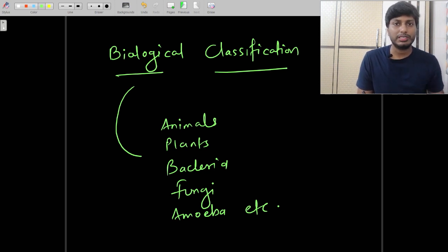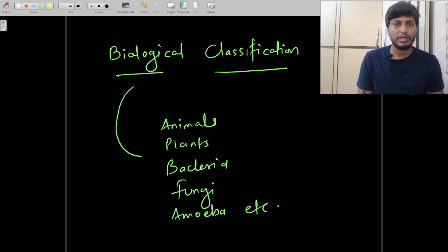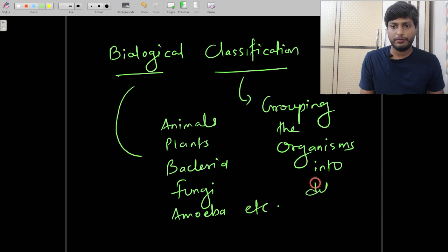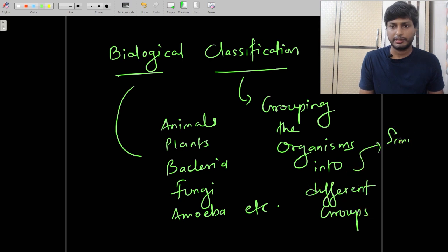If we have to understand their features and characteristics in a proper systematic manner, then we have to classify them into different groups. So the word classification means grouping the organisms into different groups based on similarities as well as differences.